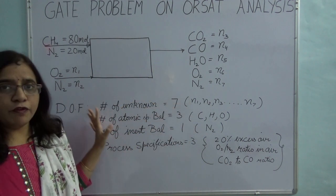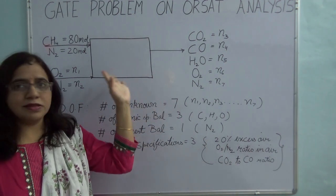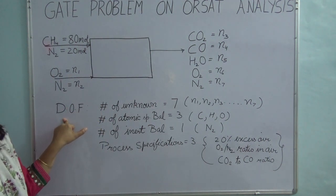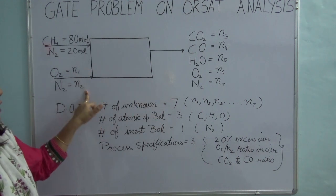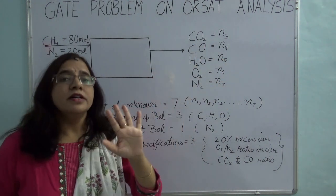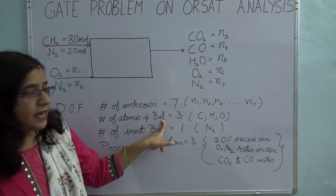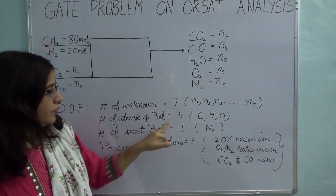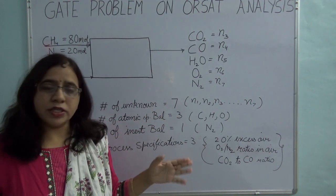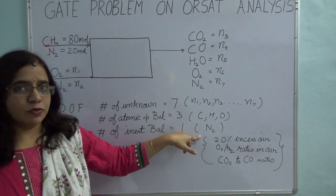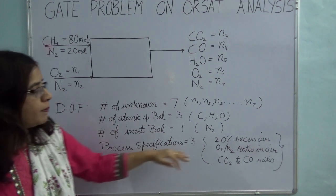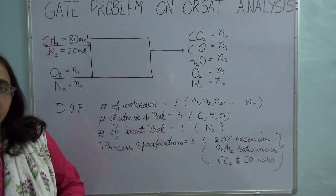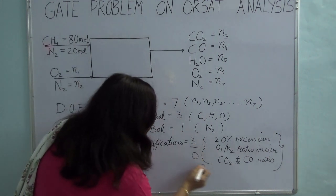Let's do a degree of freedom analysis for the atomic species balance, since a reaction is taking place and atomic species balance is the right choice. How many unknowns do we have? N1, N2, N3, N4, N5, N6, N7 — so there are seven unknown variables. The number of independent atomic species balances I can write are: carbon, oxygen, and hydrogen — three in number. I have one inert, nitrogen, which is not taking part in the reaction, giving one inert balance. Plus three process specifications. So: seven minus three minus one minus three equals zero. The degree of freedom is zero, so this problem is solvable.